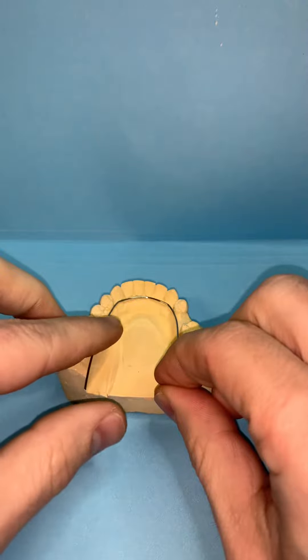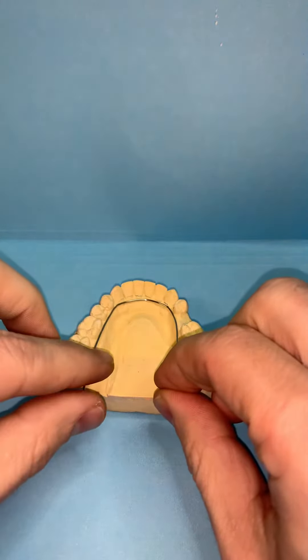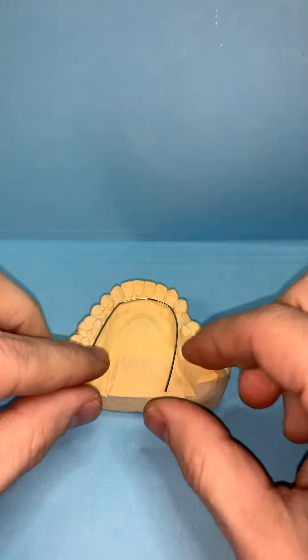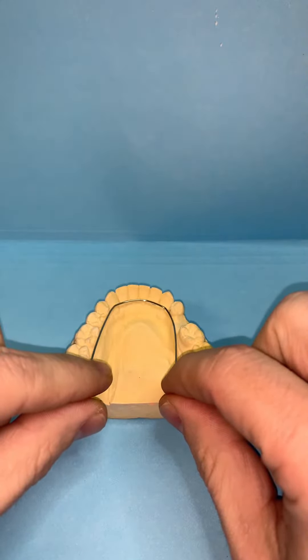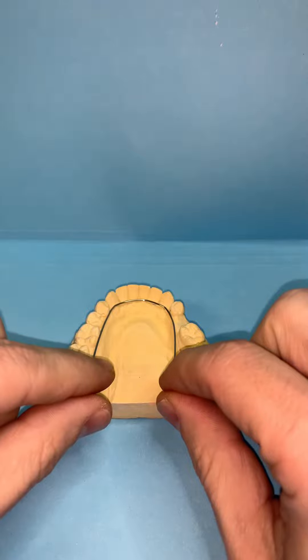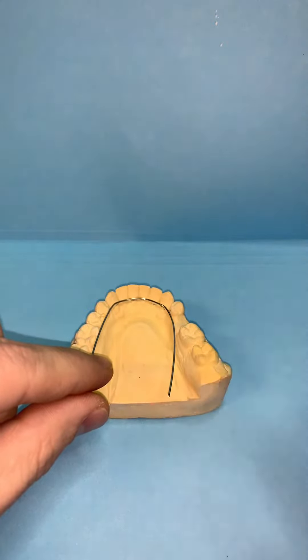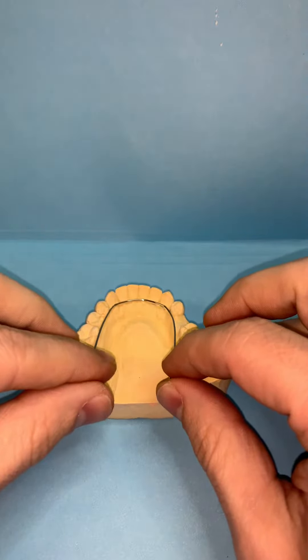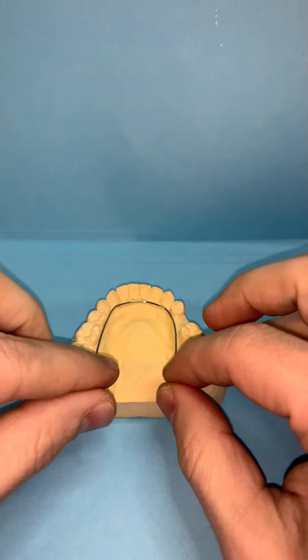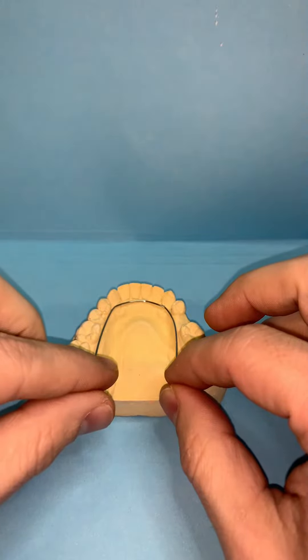And then just contour it along the lingual of the posterior teeth. You want to make sure that this contacts the cingulums of the anterior teeth because if you have any pressure from the distal, it's not going to push the teeth out of position. The tooth is very anchored in at the cingulum.